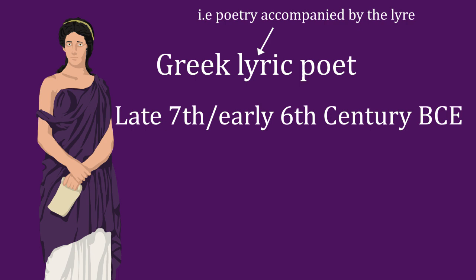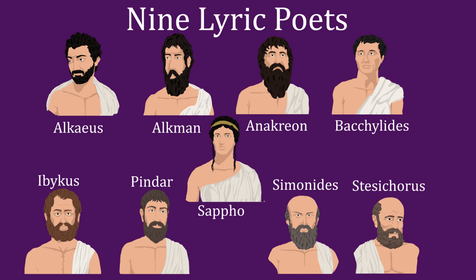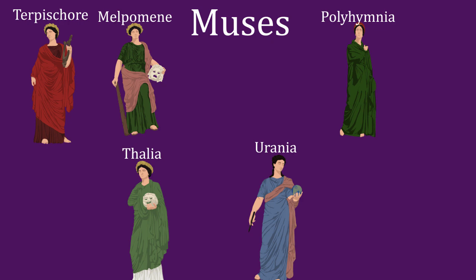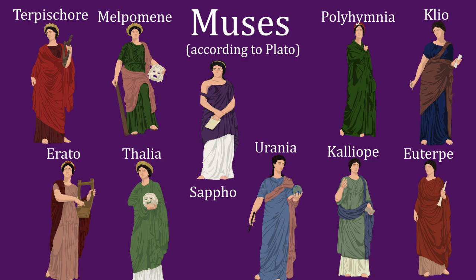She was renowned throughout the Greek world and is the only woman among the so-called Nine Lyric Poets — a group of famed poets that the esteemed scholars at the famous Library of Alexandria deemed worthy of critical study. Her works were widely admired throughout the ancient period, with Plato himself even going so far as to describe her as the tenth member of the Muses, the nine inspirational Greek goddesses of literature, science, and the arts.